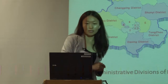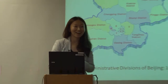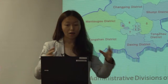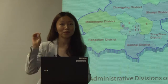The bottom line is that China doesn't have suburbs. Suburb doesn't exist in China as an independent administrative entity. I will use the city of Beijing as an example to elaborate. The map on the left is a district map of Beijing. The city of Beijing has about 14 districts and two counties. Some of the outer districts you can call suburbs, but they don't have independent local governments — there are district governments, but they are all under the jurisdiction of the municipal government of Beijing.